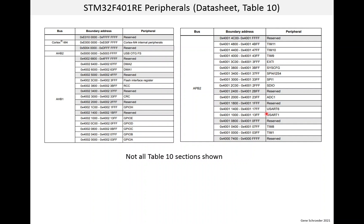One thing you might notice: the register map showed seven registers for USARTs, each four bytes, so that's 28 bytes. But this table shows 1,024 bytes allocated for each USART, meaning there are a lot of unused addresses. This is typical because there's plenty of address space — four gigabytes — and it is easier in hardware design to allocate larger blocks to peripherals. If you try to access those unassigned addresses, you won't get anything useful and will probably get a hard fault interrupt, so be careful.